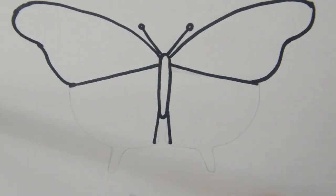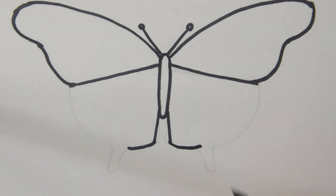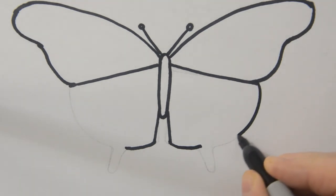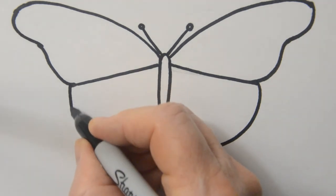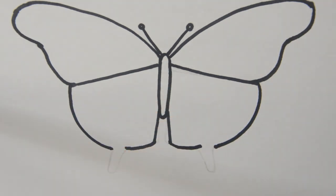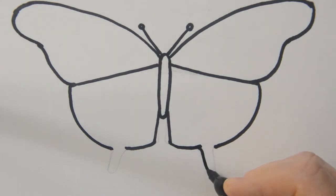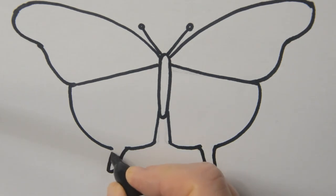Next step. It curves over. It curves over. It curves down and down. It curves down and up. And down and up.